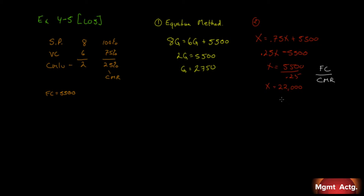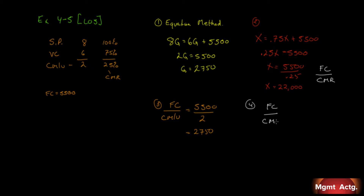Number three: solve the breakeven point in unit sales using the formula method. We start with fixed costs over contribution margin per unit: $5,500 / $2 = 2,750 units. Number four wants us to solve in dollars: fixed costs over contribution margin ratio, $5,500 / 0.25 = $22,000. So the equation method simply works its way down to the formula anyway.